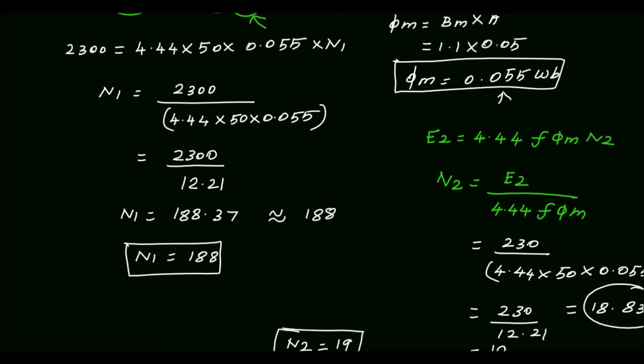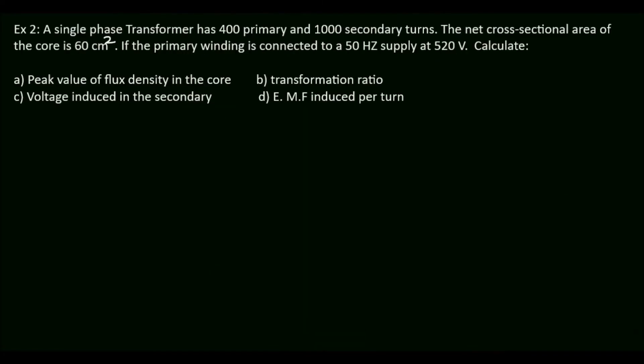The final answer for Example 1: the number of turns in the primary is 188 and the number of turns in the secondary is 19. Next we move to Example 2.